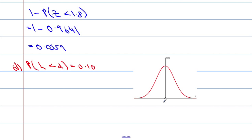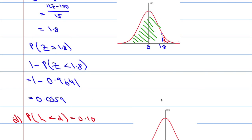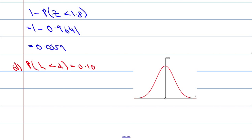The mean is 100. I want the probability to the left because it says less than D, and the probability is also less than 0.5, which tells me that D has to be to the left of the mean — because we've got a probability smaller than 0.5, giving us 0.1.